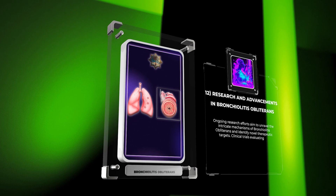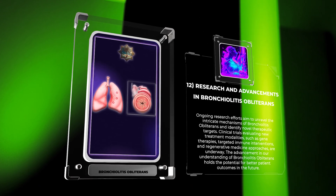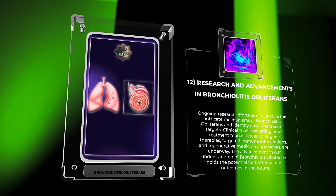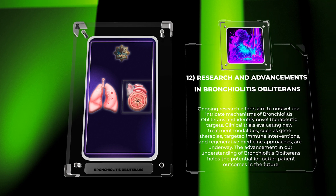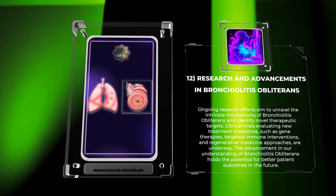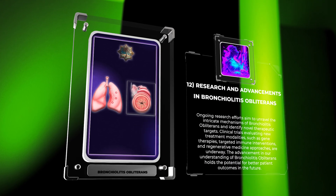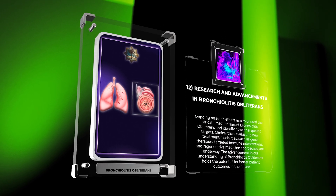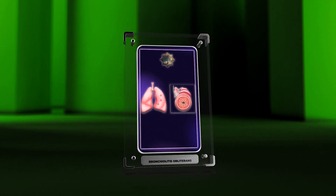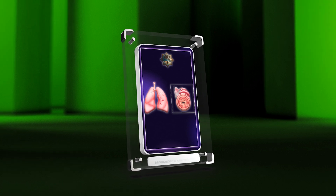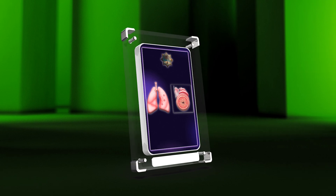Ongoing research efforts aim to unravel the intricate mechanisms of bronchiolitis obliterans and identify novel therapeutic targets. Clinical trials evaluating new treatment modalities, such as gene therapies, targeted immune interventions, and regenerative medicine approaches, are underway. The advancement in our understanding of bronchiolitis obliterans holds the potential for better patient outcomes in the future. Bronchiolitis obliterans is a complex respiratory condition with multiple causes, symptoms, and treatments. Staying informed about the latest research is crucial for providing optimal care to patients. Thank you for watching.